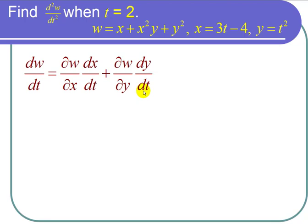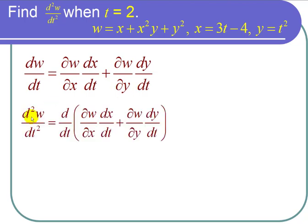To find the second derivative, I take d over dt of both sides, giving d squared w over dt squared equal to d over dt of the first derivative. Notice that del w del x times dx over dt is a product of two functions, so I have to use the product rule here, and also for the second term.